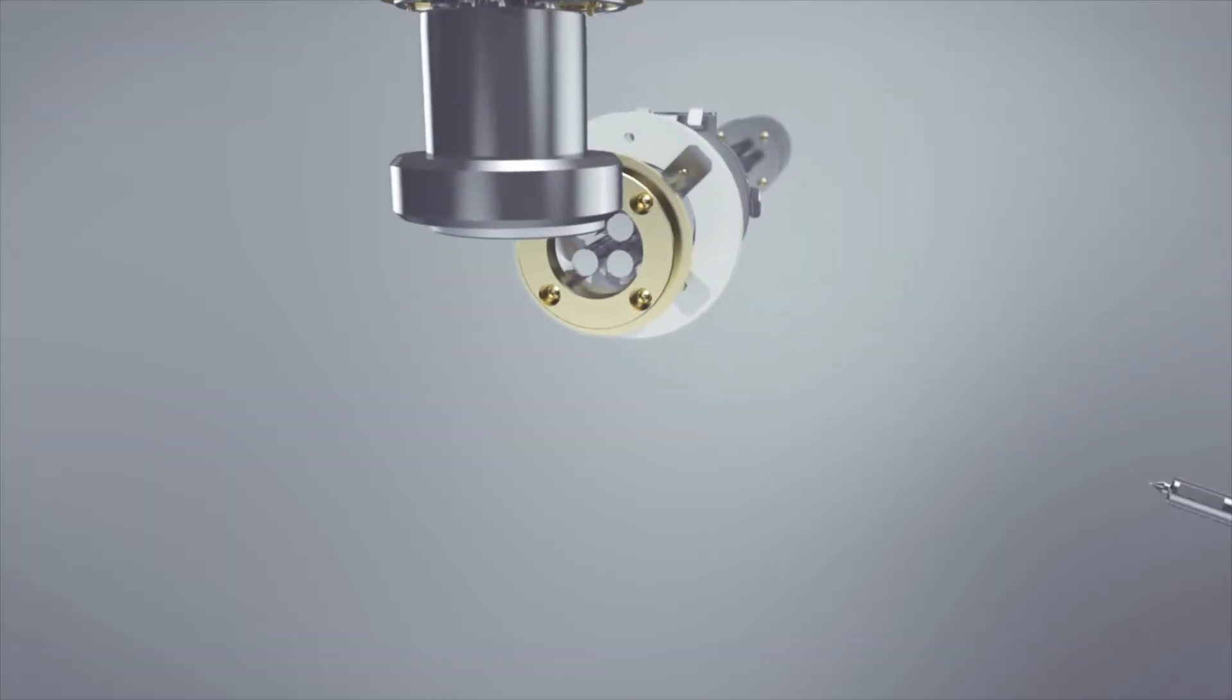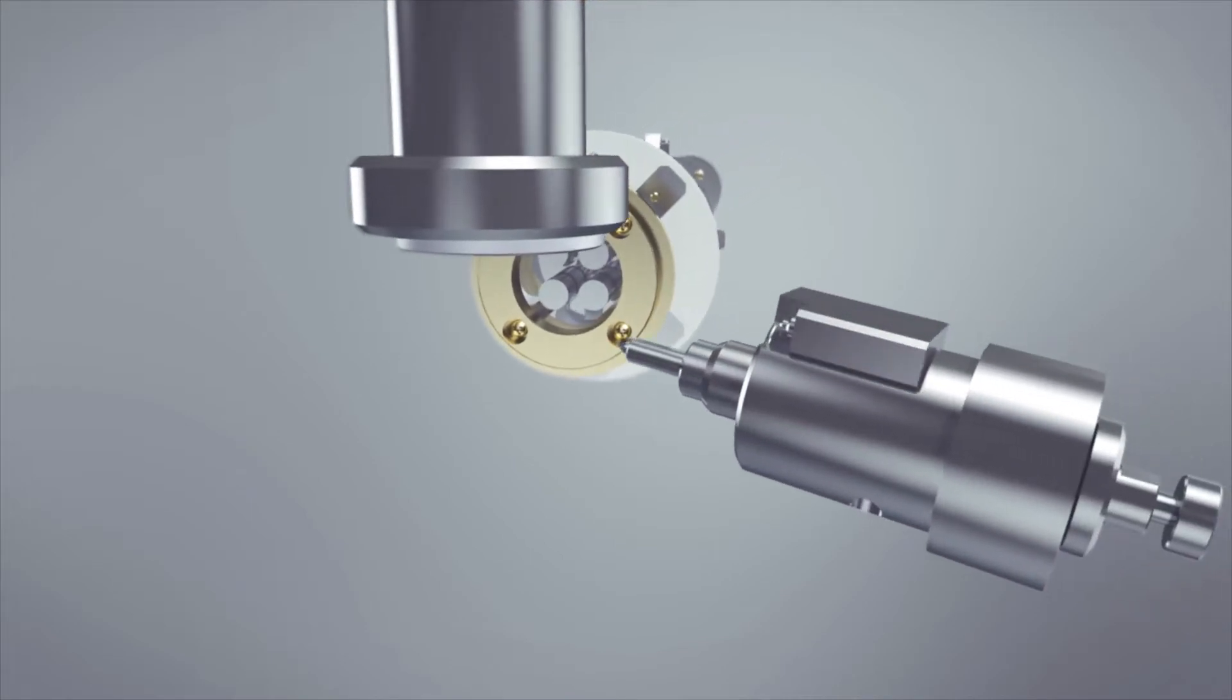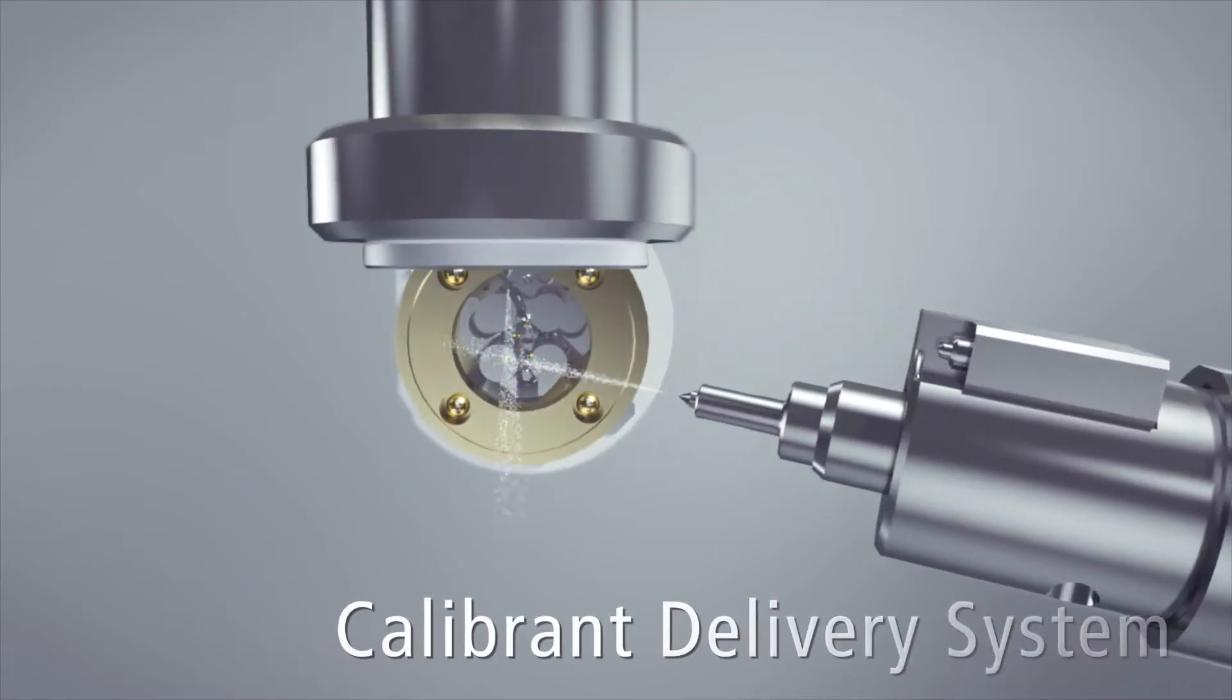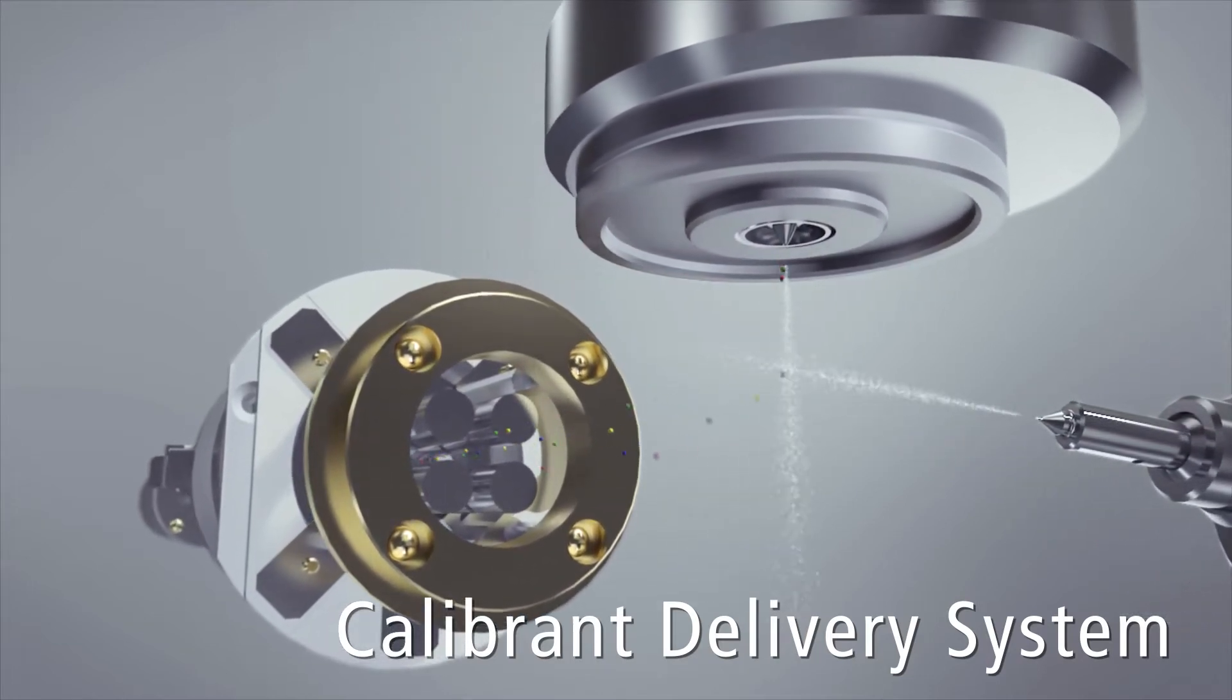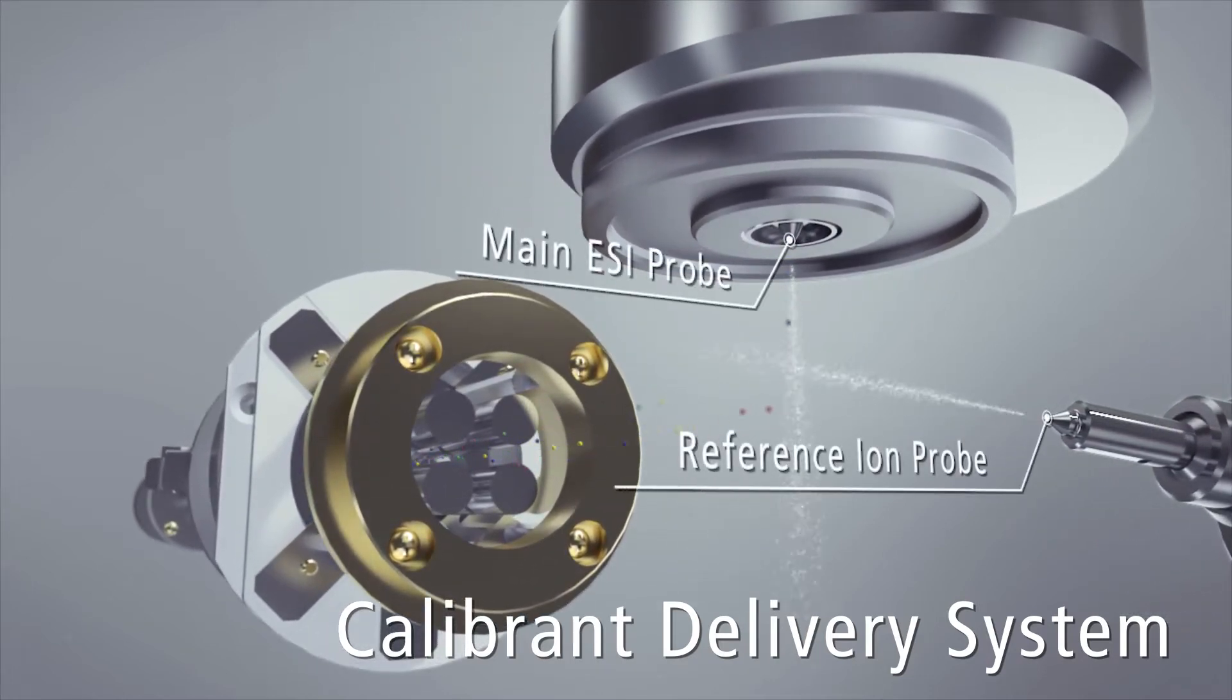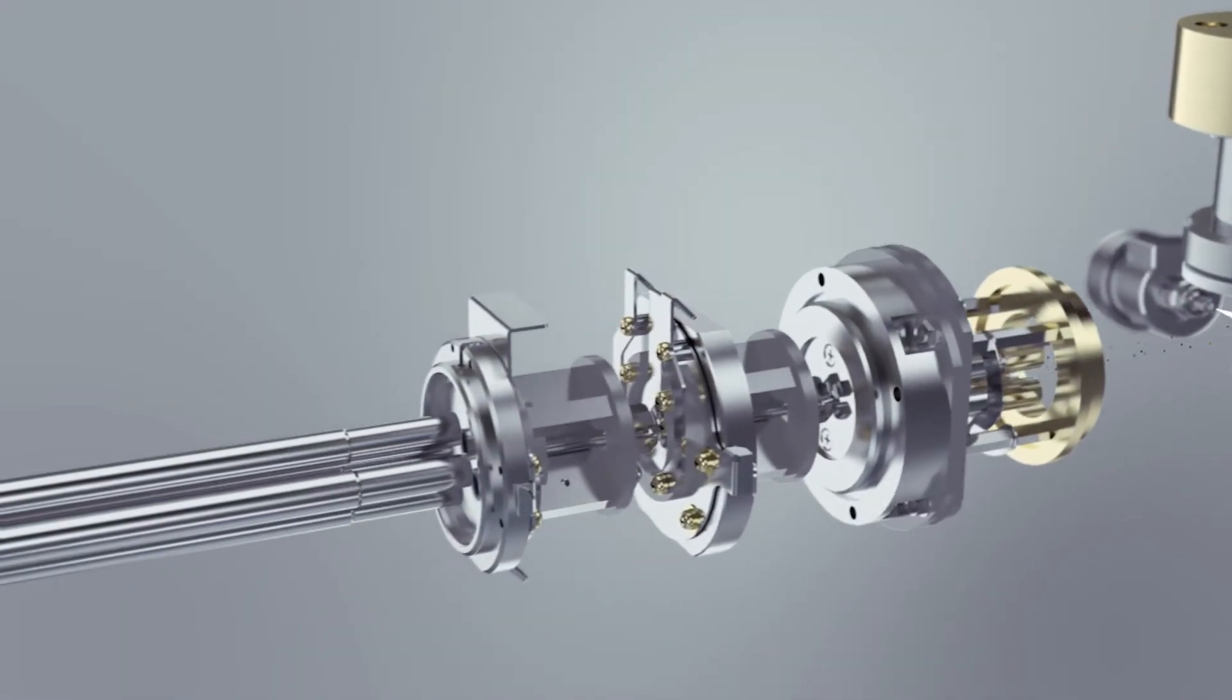For sample introduction, the LC-MS 9030 uses a calibrant delivery system. An independent ESI probe is dedicated for calibrant ionization to ensure successful mass calibration whatever the experimental conditions.